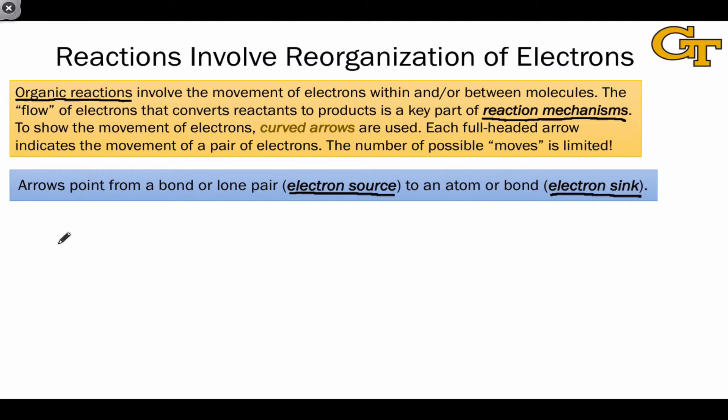And the number of possible moves is limited here because the types of electron sources and sinks that can exist in Lewis structures are limited. Specifically, the only real electron sources that we have are those locations in Lewis structures where electrons are indicated, such as lone pairs, single bonds, double bonds, and triple bonds.